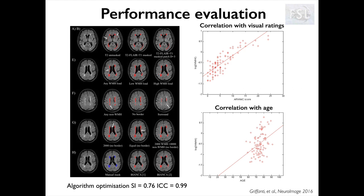We tested Bianca on several cohorts including healthy aging, vascular, and neurodegenerative populations. We found that although it is not perfect at the single-voxel or single-lesion level, it is quite good in terms of overall volume and overall agreement and overlap with manual masks — as shown by the similarity (Dice) index calculated between Bianca results and manual masks, and by the good intra-class correlation coefficient calculated on volumes. However, we should remember that manual masks are our gold standard but not necessarily the ground truth, given inter- and intra-rater variability and the inherent ambiguity in defining lesion boundaries.